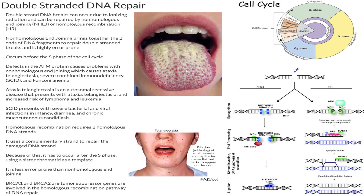Now that we have talked about non-homologous end-joining and the issues that arise, let's talk about homologous recombination and compare it to non-homologous end-joining. Homologous recombination is another way to repair double-stranded DNA breaks; however, it requires two homologous DNA strands.